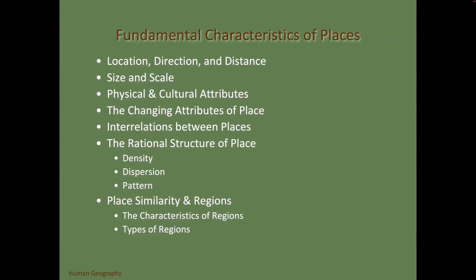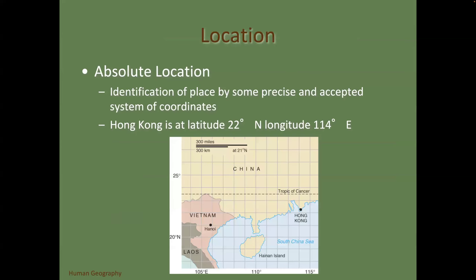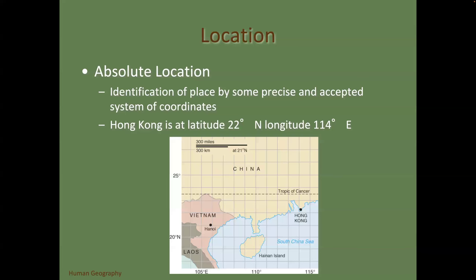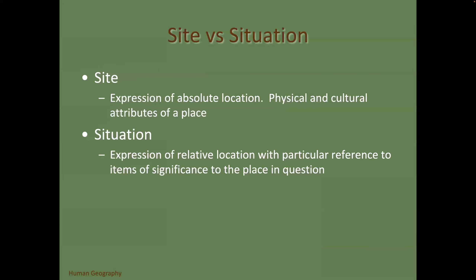Location: the idea of specific, precise, and accepted. Hong Kong at latitude 22, longitude 114 east — only one place occupies that coordinate. Relative location is one place in relation to another: Hong Kong is south of the Tropic of Cancer, latitude 23.5 degrees north, meaning Hong Kong sits in the tropics. Site and situation: site is an expression of absolute location, situation is an expression of relative location.